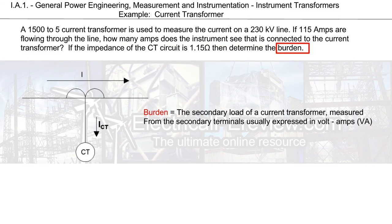Second thing worth pointing out is burden in this definition is a secondary load of the current transformer measured from the secondary terminals. It's usually always going to be expressed in volt amps.